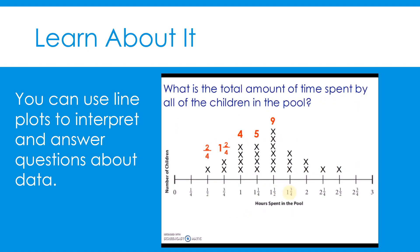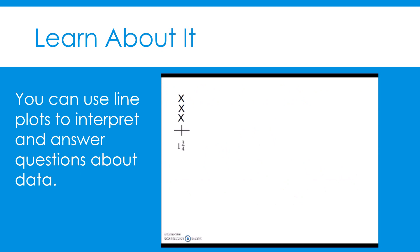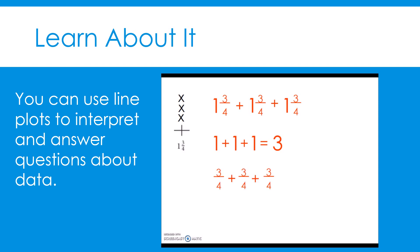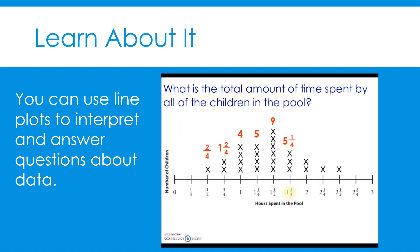Next, we have one and three-fourths. Those three X's represent one and three-fourths plus one and three-fourths plus one and three-fourths. If we add the whole numbers together first, that equals three. If we then add three-fourths three times, that equals nine-fourths, which is the same as two and one-fourth. Finally, we add three plus two and one-fourth together, which equals five and one-fourth hours. We add that to our line plot.